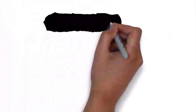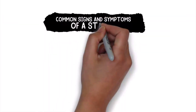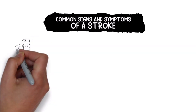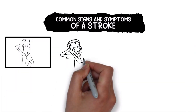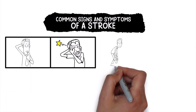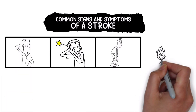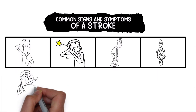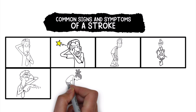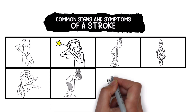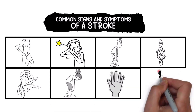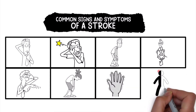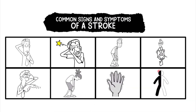Some of the common signs and symptoms of a stroke include confusion, headache, dizziness, loss of coordination, difficulty seeing, difficulty walking, and sudden numbness or weakness on one side of the body.